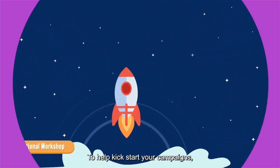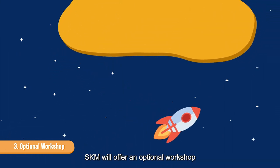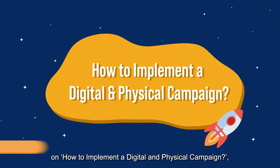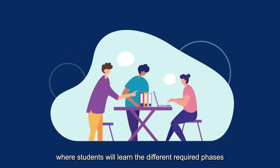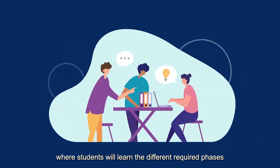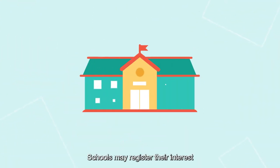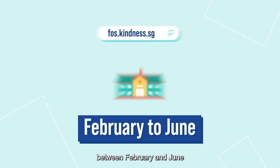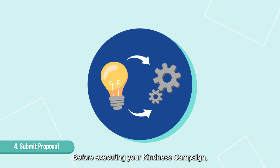To help kickstart your campaigns, SKF will offer an optional workshop on how to implement a digital and physical campaign, where students will learn the different required phases of executing a campaign. Schools may register their interest for the workshop at fos.kindness.sg between February and June.